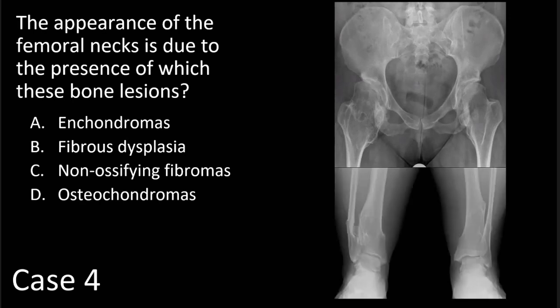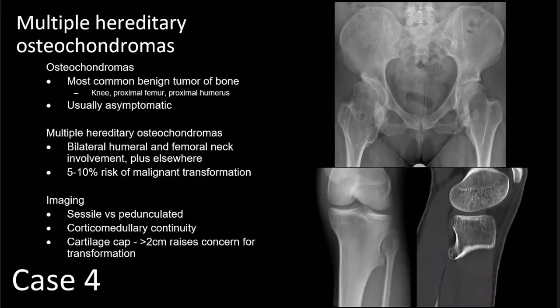To help answer this question, here is an AP standing view of both ankles showing the same pathology involving the distal tibial and fibular metaphyses bilaterally. The answer is osteochondromas, and this is a pathognomonic appearance for multiple hereditary osteochondromas. Osteochondromas are the most common benign tumor of bone, representing about 30% of benign bone tumors, with giant cell tumor being second at around 20%. Most osteochondromas occur around the knee. When patients have multiple hereditary osteochondromas, they have this pathognomonic appearance of sessile osteochondromas involving the femoral necks, with that widened femoral neck appearance and loss of normal waisting. A very similar appearance can occur in the proximal humeri as well.